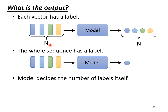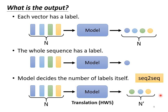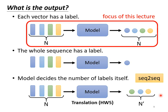There is still a third kind of output. In this kind of output, we don't know beforehand how many labels the machine should output — we allow the machine to decide by itself. Your input may be n vectors, and the output may be n' labels, because the machine decides what n' actually is. This kind of task is referred to as sequence-to-sequence. We will deal with sequence-to-sequence in homework 5. You can think of translation as an example: because the input and output are in different languages, the number of words won't necessarily be the same. Speech recognition is also a sequence-to-sequence task — you give the machine an audio clip and it outputs a text passage.